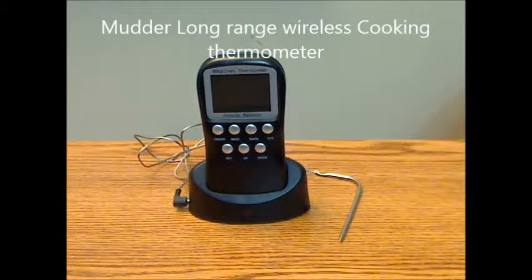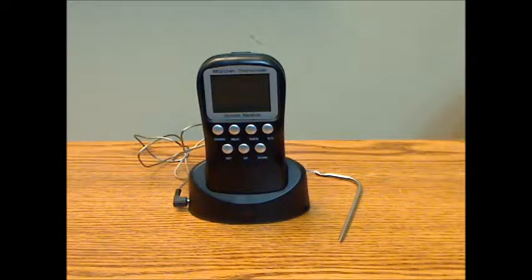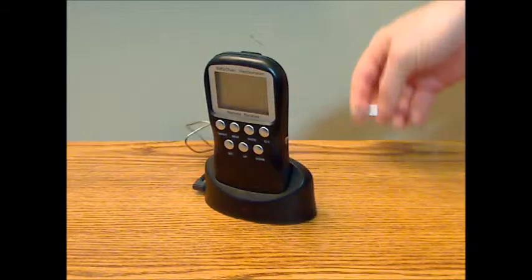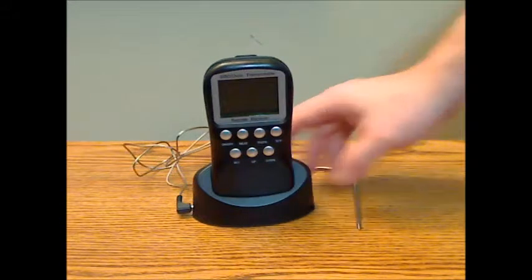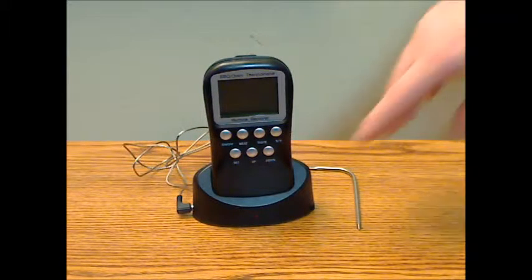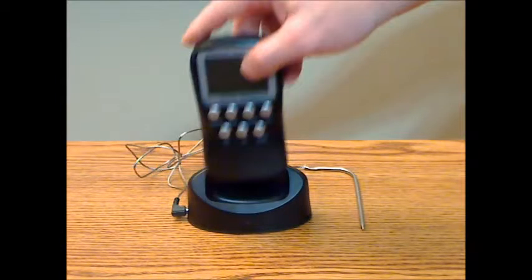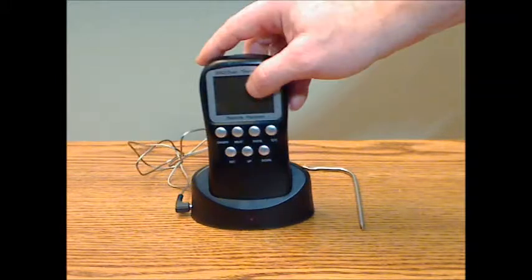This is the Mudder Long Range Wireless Cooking Thermometer. Included with the digital thermometer are the instructions, an approximately three-foot long probe with cable, the transmitter base, and of course the portable thermometer display.